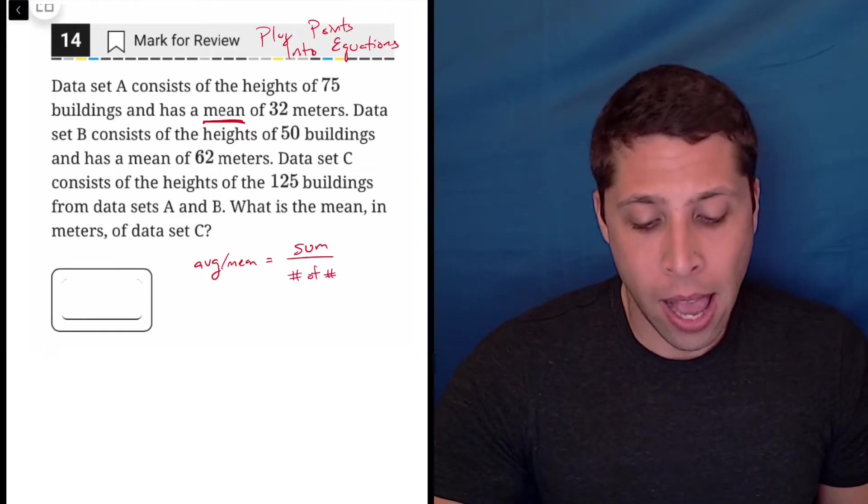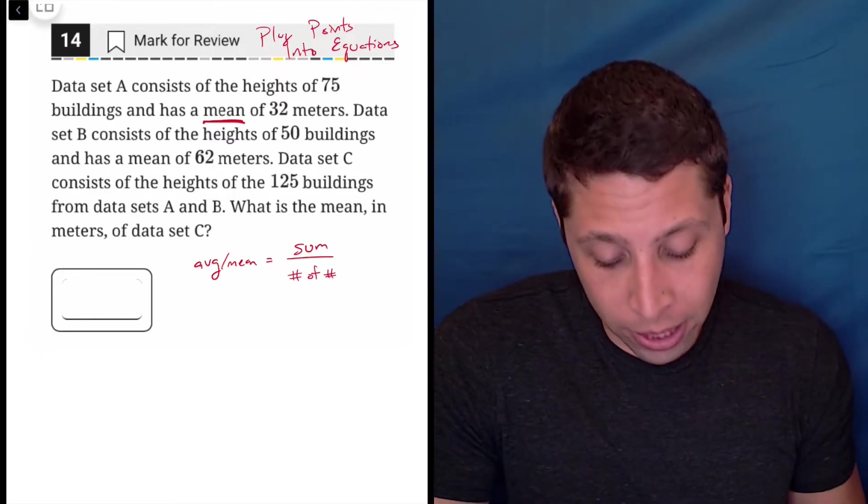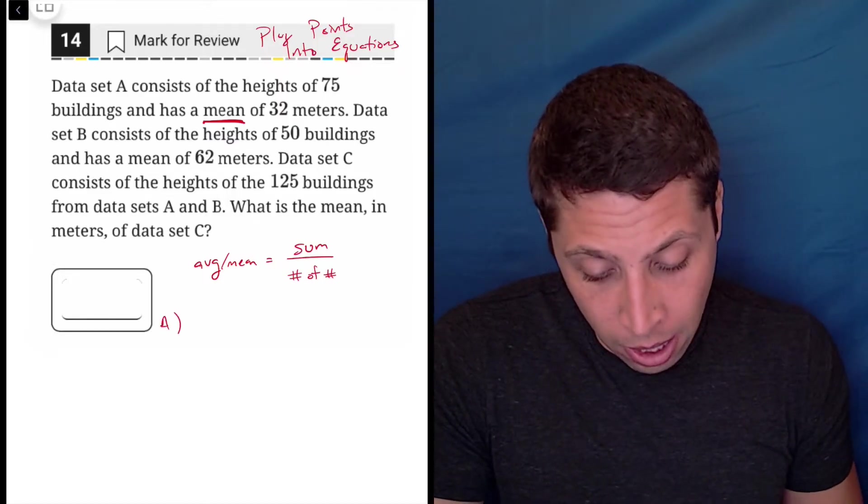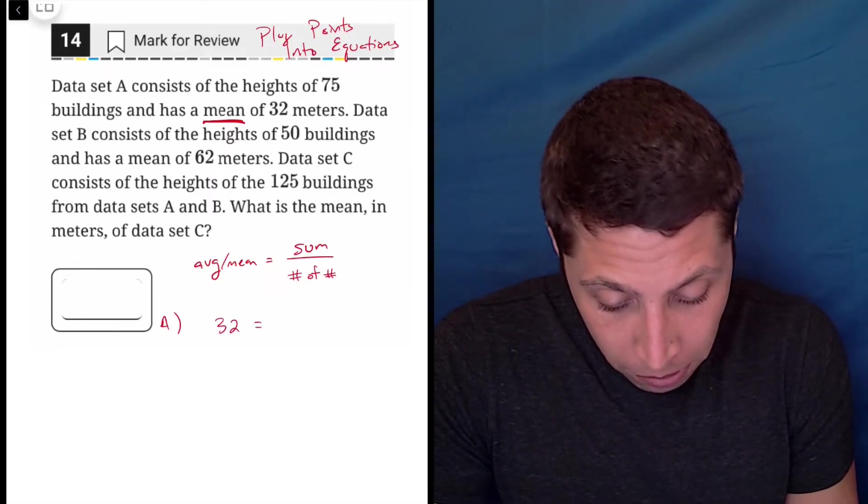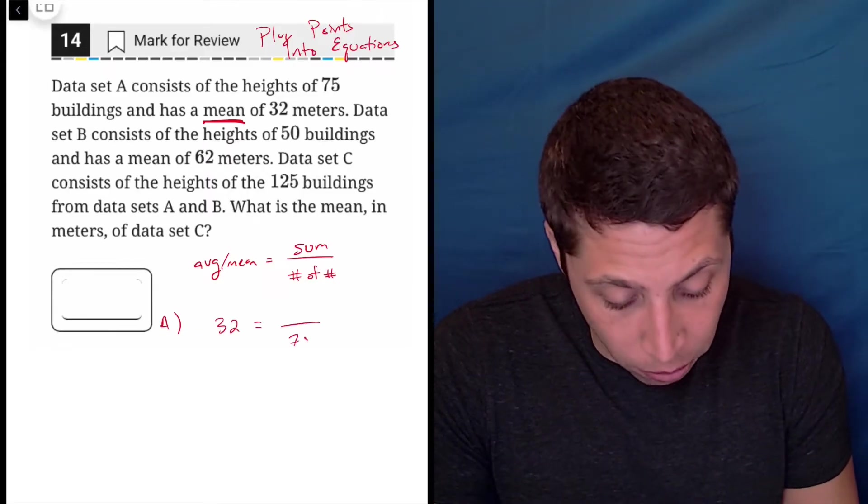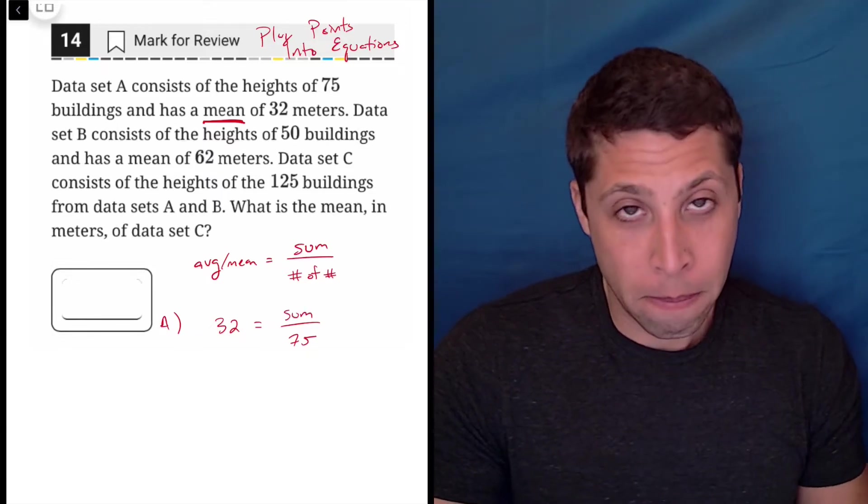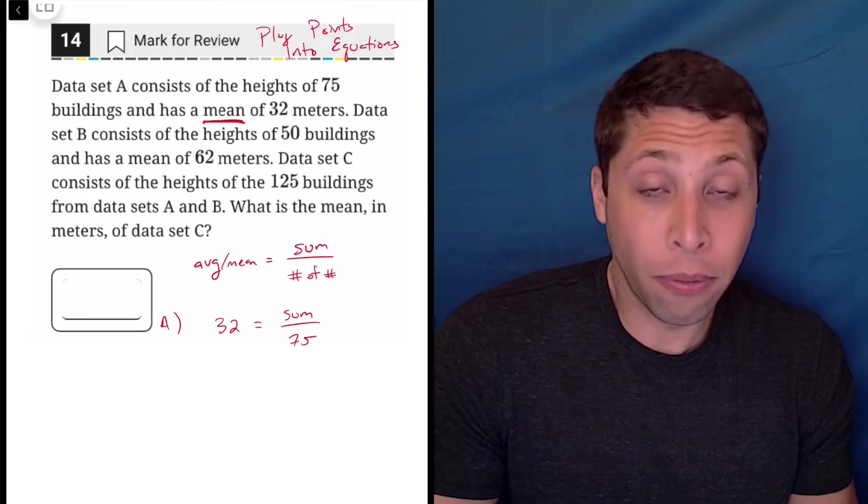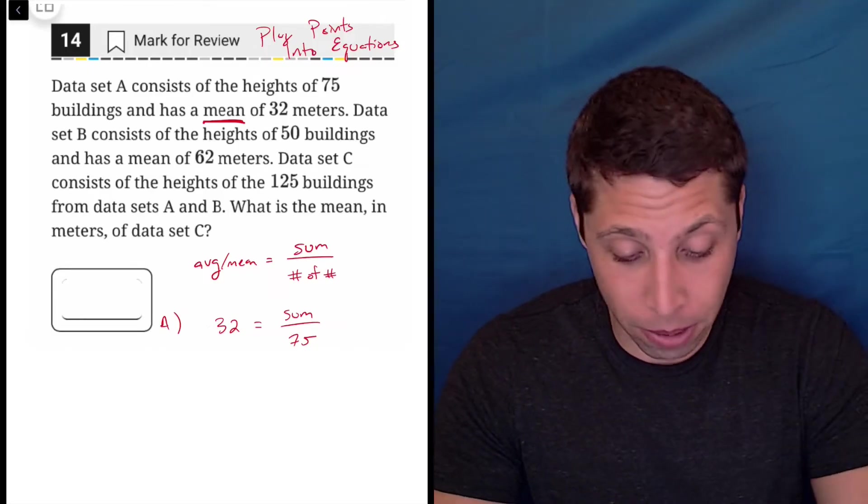Without thinking too hard, I kind of have pieces that I can plug into this. For dataset A, they tell me the mean is 32 and it's 75 buildings. So I have the number of numbers, I don't know the sum, but I can solve for it now because I have the other two pieces. I don't know why I need to solve for it, but I'm gonna.